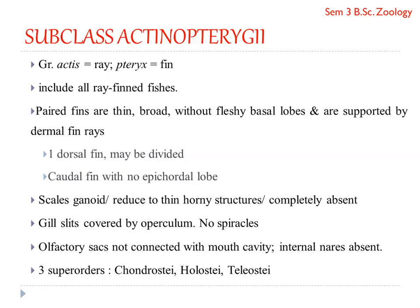The tail fin can be divided into two halves. The upper half, on the dorsal side, is known as the epicordal lobe, and the one on the lower ventral side is called the hypocordal lobe. In Actinopterygii, the epicordal lobe is reduced or completely absent. What happens is that the hypocordal lobe is modified to form the two halves of the caudal fin. We will look at this in detail when we study fin structure in later sessions.